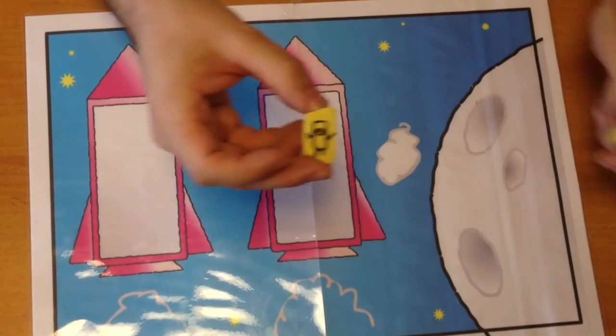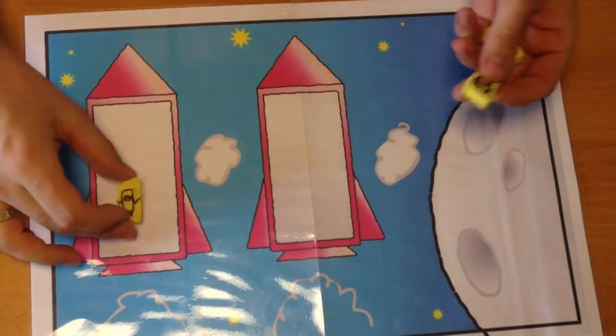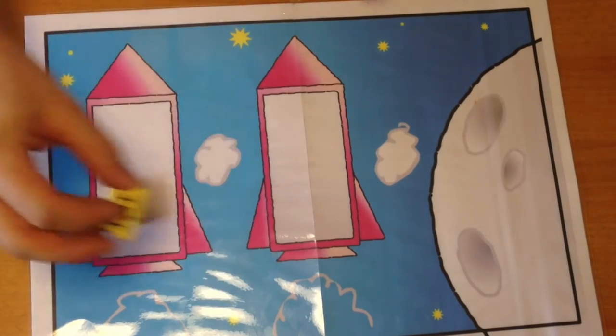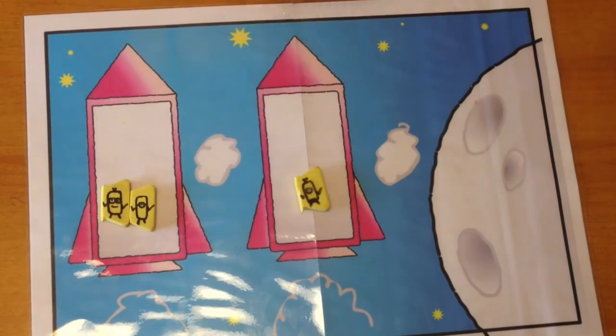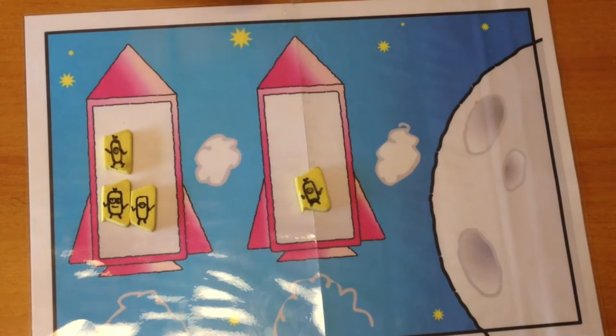What do I have here? Can you tell me? That's right. It's a Minion. Put some there. Put some there. Here we go. It's a Minion. Well done.